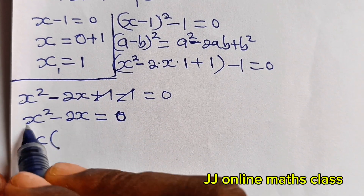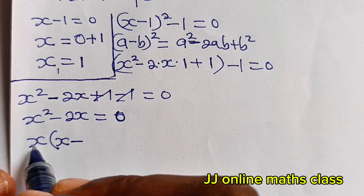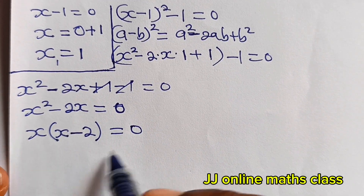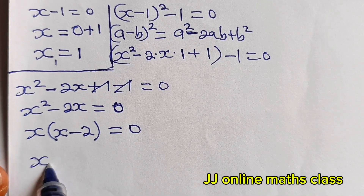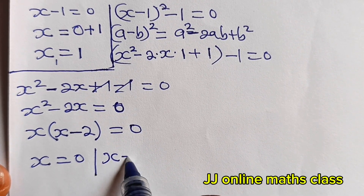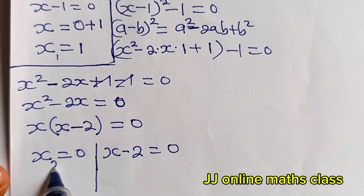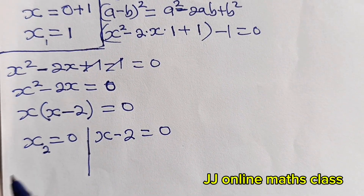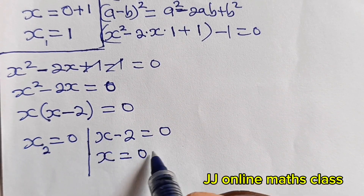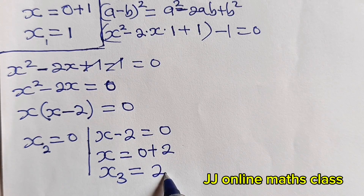Factorizing x out of x² - 2x = 0 gives x(x - 2) = 0. So either x = 0 or x - 2 = 0, meaning x = 2. That gives us the second and third values of x.